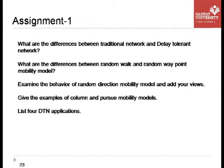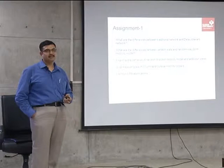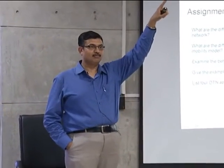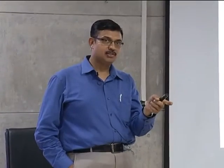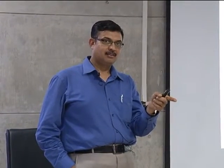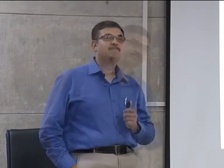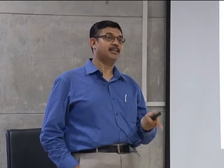For random direction mobility model, nodes are more toward the boundary. When they hit the boundary, they change direction by 180 degrees with no sharp turns. For column mobility model — an example is students following the class teacher — they move in a single column with the same direction, speed, and coordinates. In column mobility, there are ideally no random walks within the column, unlike group-based mobility where nodes within the group can have random walks while still referencing the group leader.